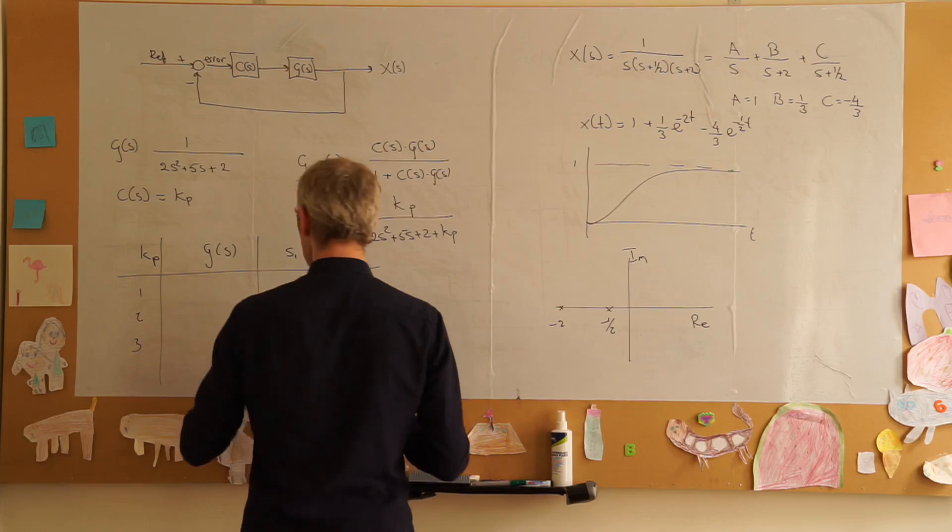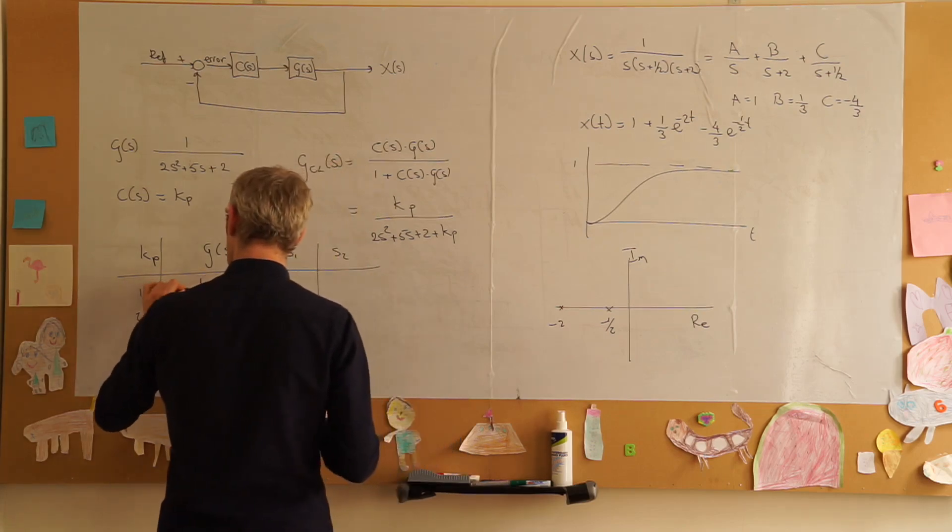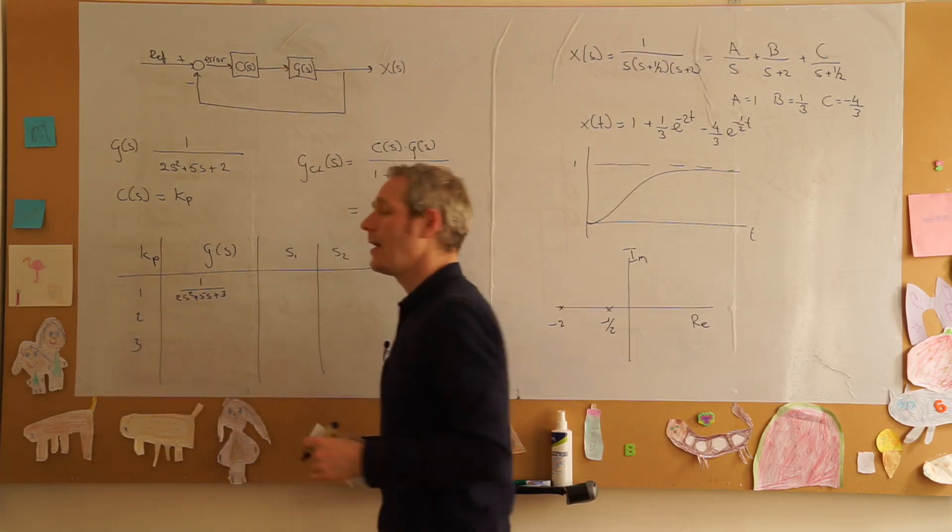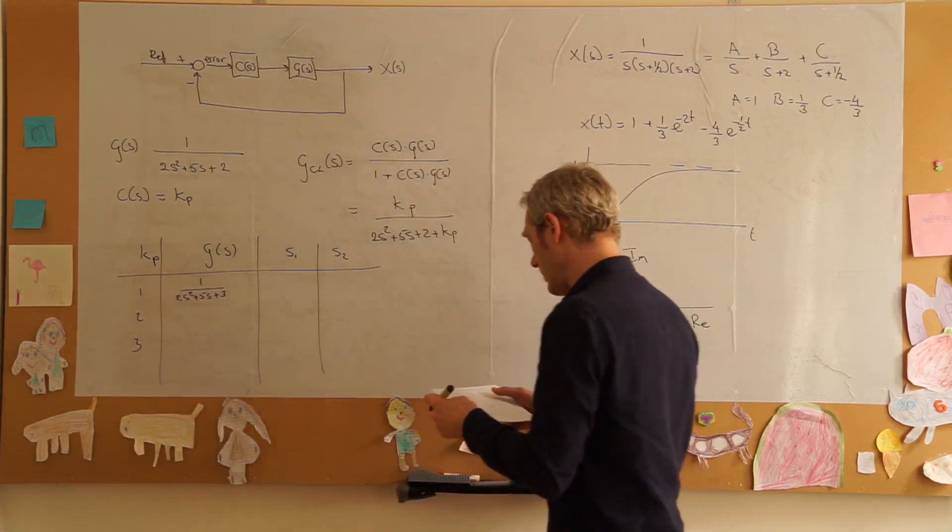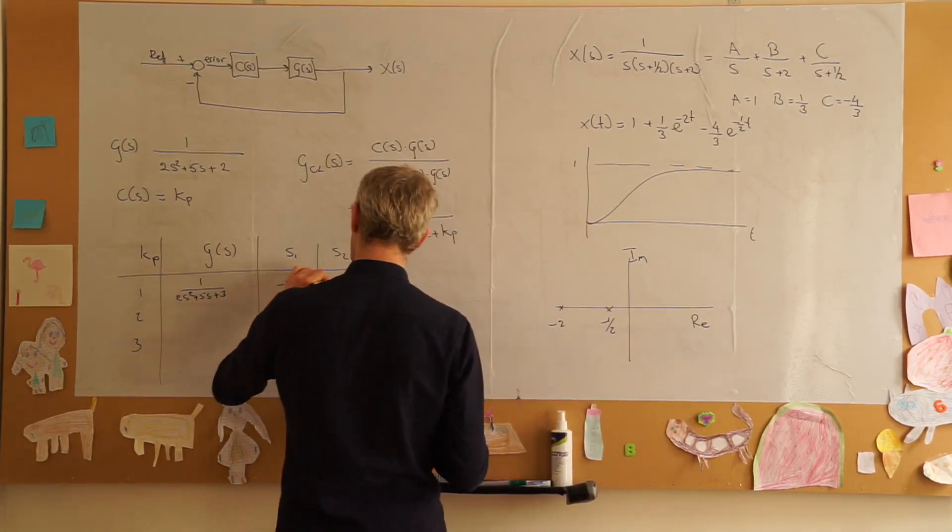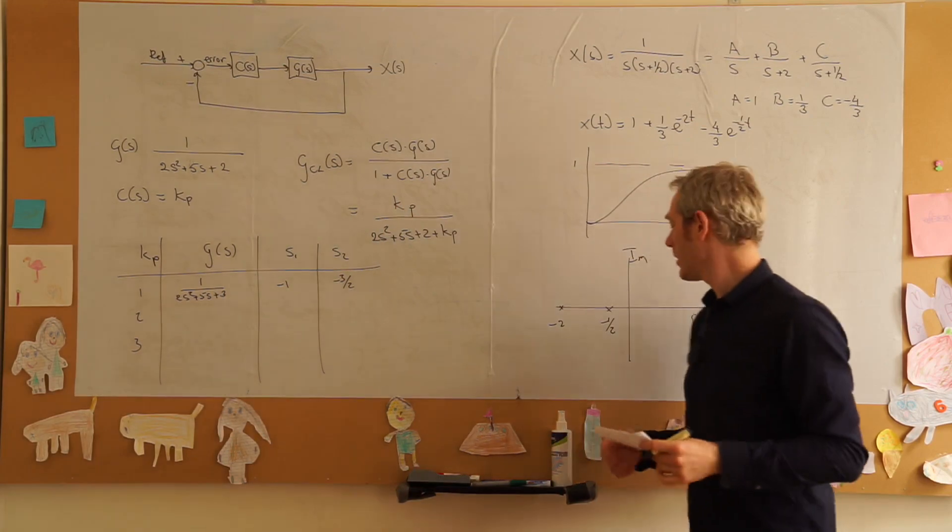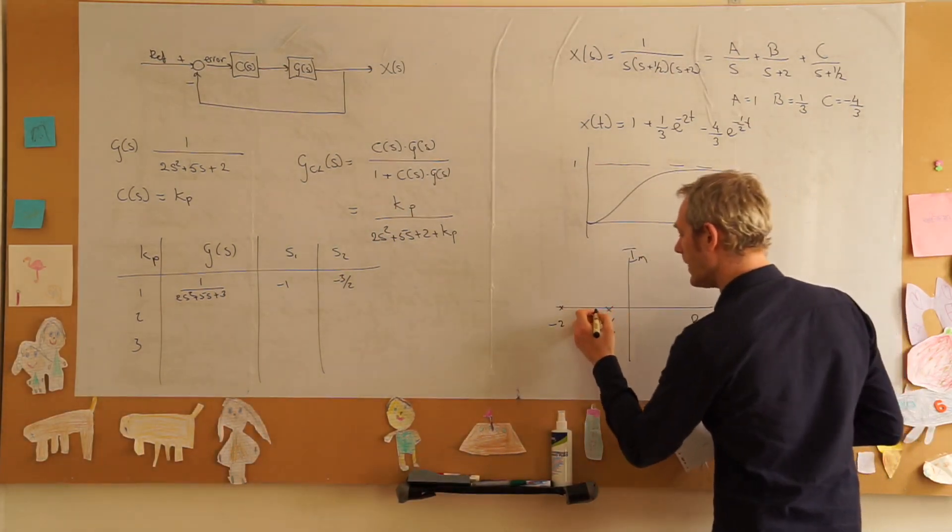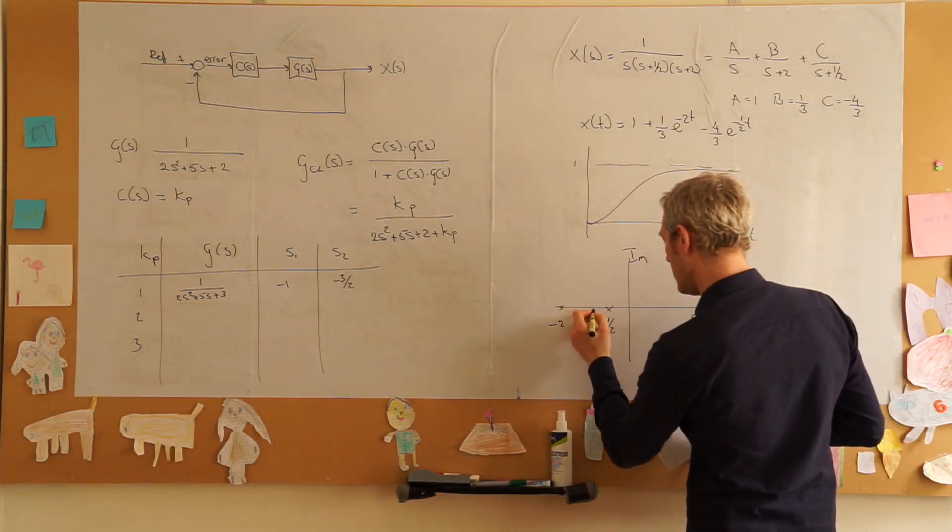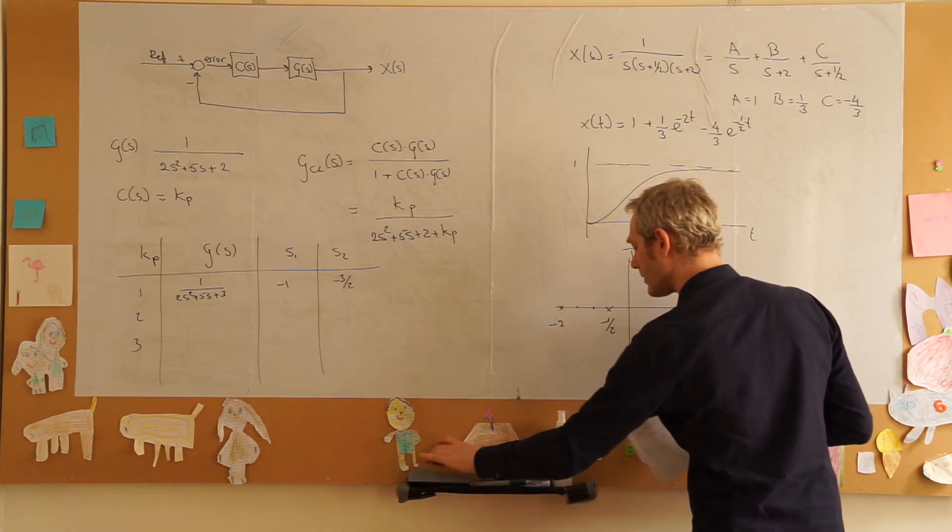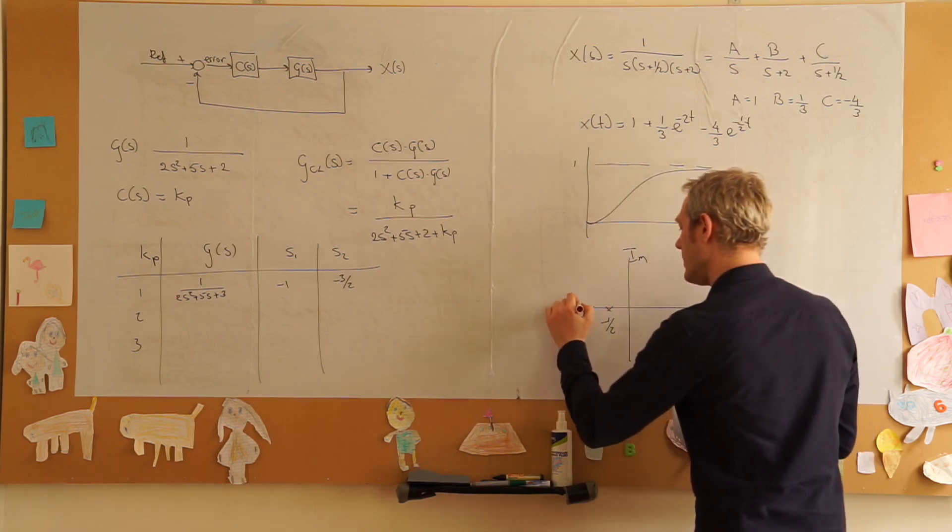Let's see what happens if we increase the gain. If k p is equal to one, what we will get is one over two s squared plus five s plus three and our new poles will lie at minus one and minus three over two. We'll see that in the first iteration they move closer to each other.